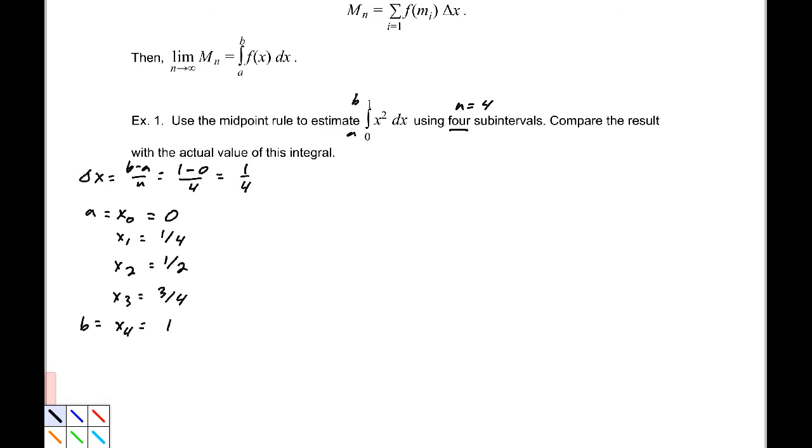The midpoint rule, this is where it differs from things like the left and right endpoint rules. We are going to find the midpoint of these intervals. We have zero to 1/4, 1/4 to 1/2, 1/2 to 3/4, 3/4 to one. Those are our intervals. The midpoint of each of these, if we average those two, m1 here is 1/8, that is halfway between zero and 1/4.